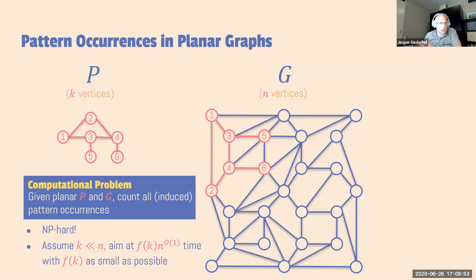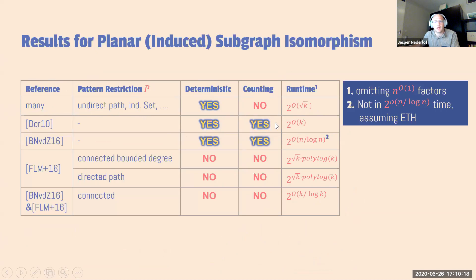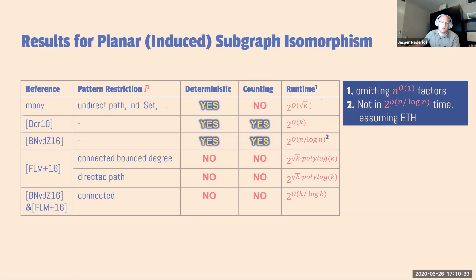There has been quite some work on this. If the pattern happens to be an unordered path or independent set, there is a deterministic algorithm that detects such a pattern occurrence in time 2 to the square root of K. In 2010, Doran gave a deterministic counting algorithm running in 2 to the K. Then in 2016, Bodlaender, myself, and van der Zander gave a deterministic counting algorithm with the funky running time 2 to the N over log N. Somewhat surprisingly, this turned out to be the right running time — improving it would violate the exponential time hypothesis.